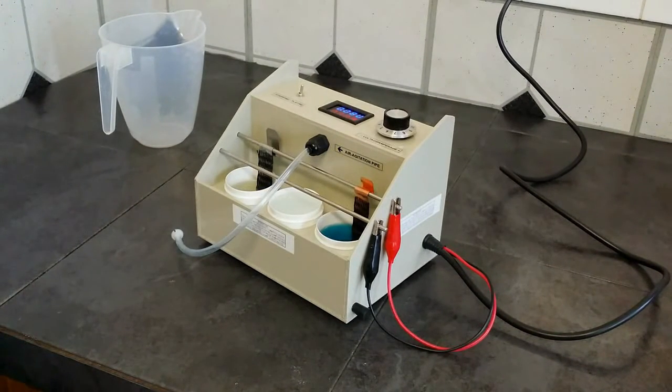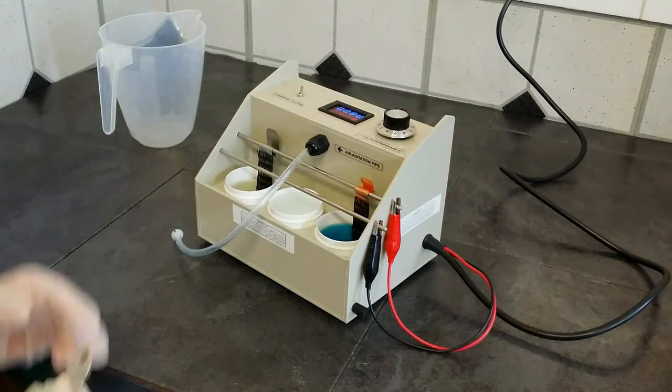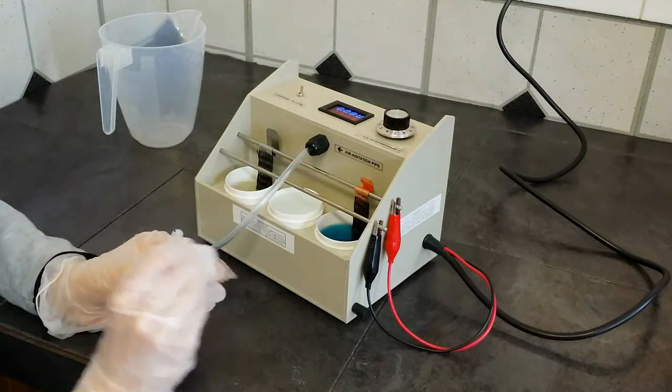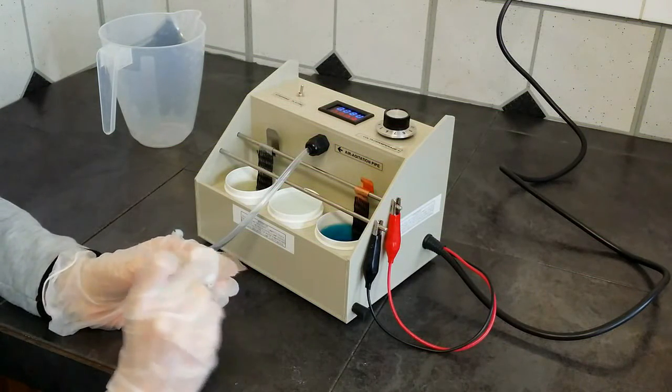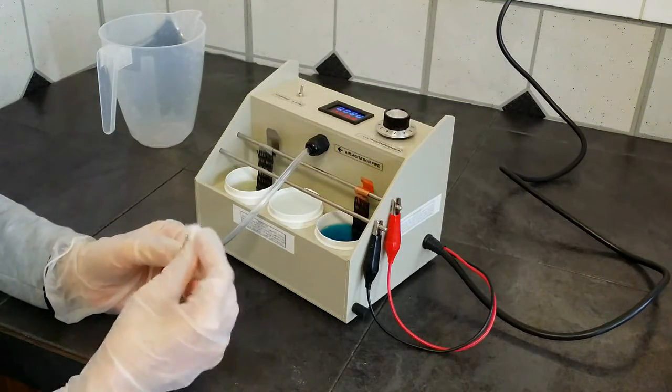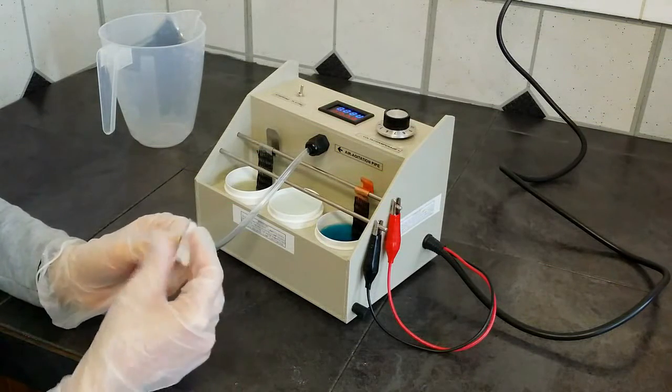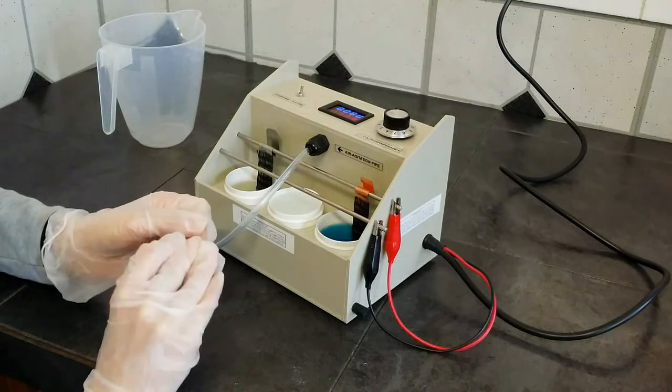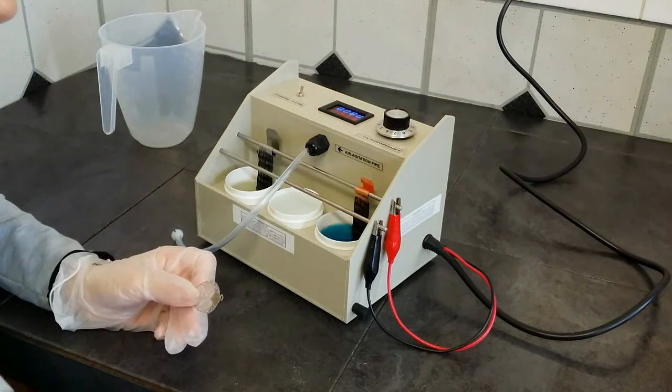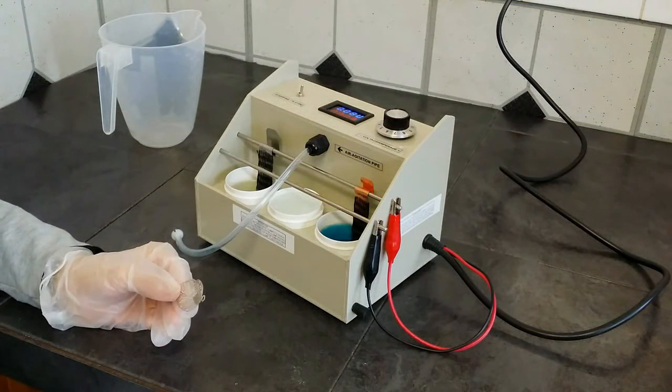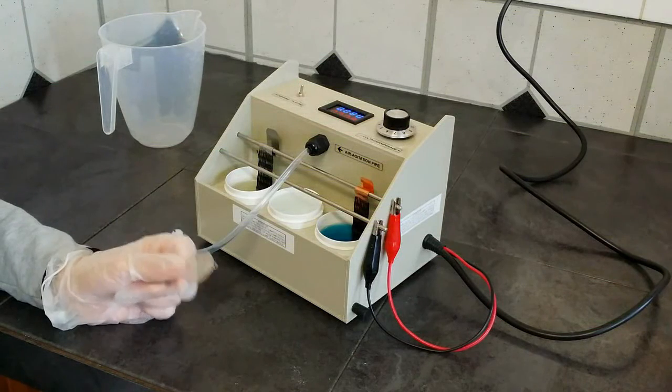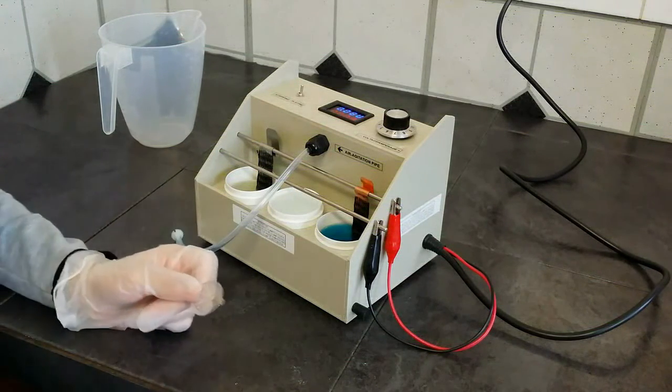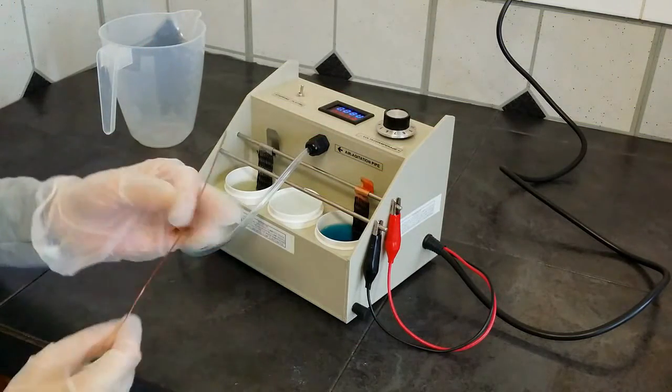Now we need to prepare our object for the electroplating process. To do this, I will clean it with the alcohol. And usually we use thin wires made of copper or aluminium to attach the object to the rod. So you could use something like this.